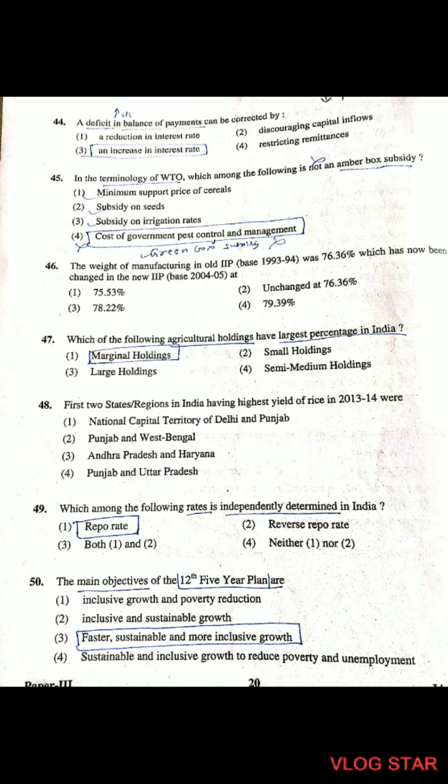Question 49: Which among the following rates is independently determined in India? The repo rate is independently determined in India. The repo rate is the rate at which the RBI lends money to commercial banks. The reverse repo rate is the rate at which commercial banks lend to the RBI.